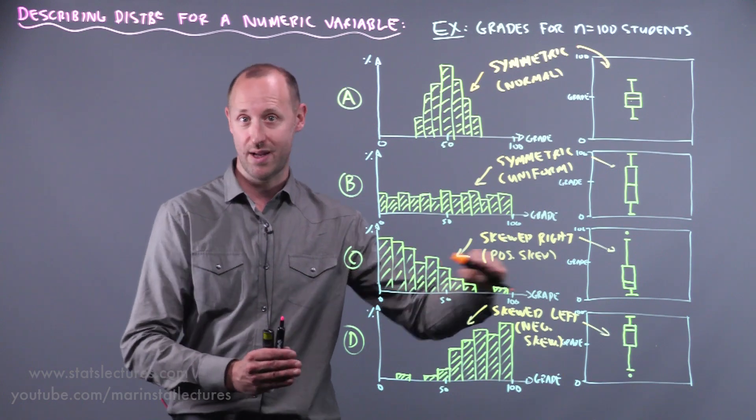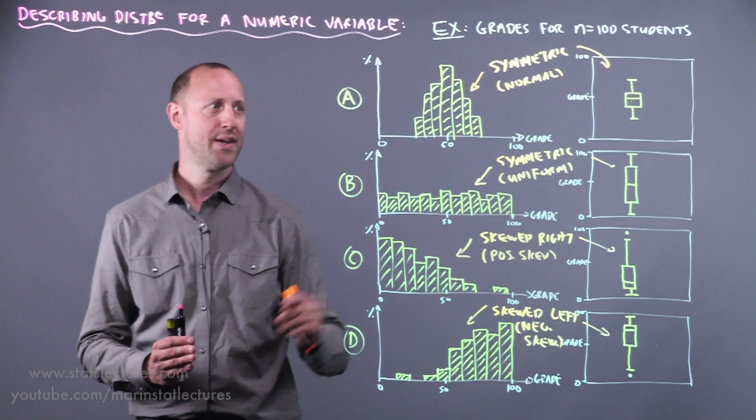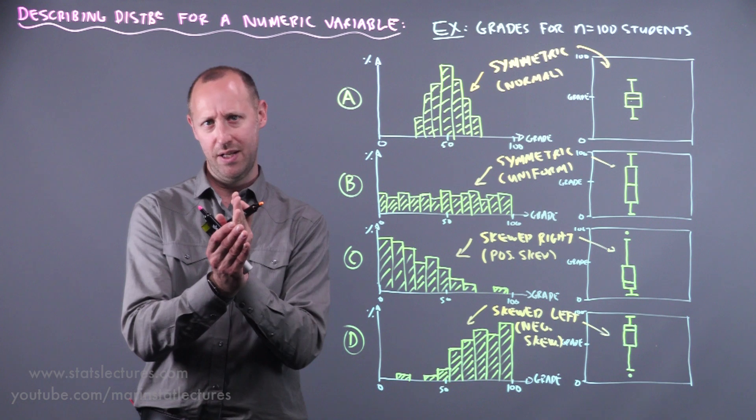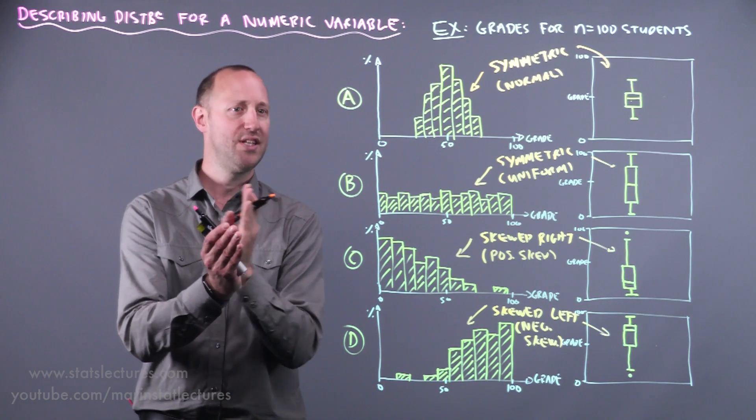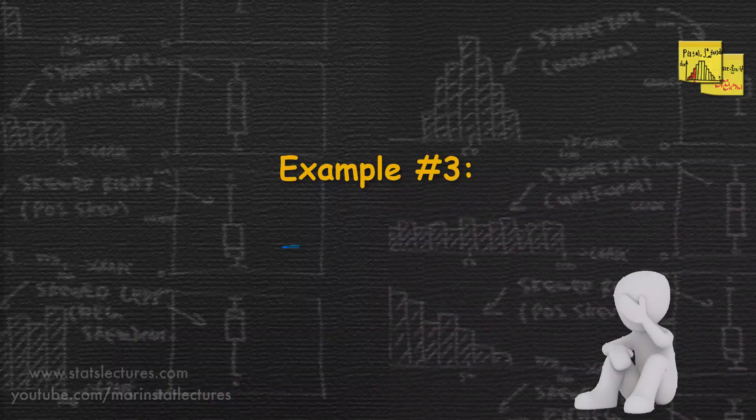If we think of heights of adults, so once people are no longer growing, they tend to have more symmetric distributions. There's an average or mean or median height and people are somewhat evenly distributed above and below that. And it often tends to be a bit more normal or bell shaped.